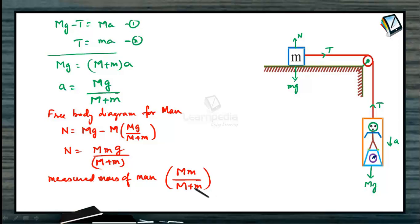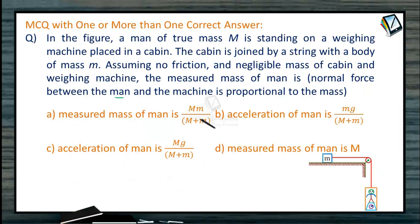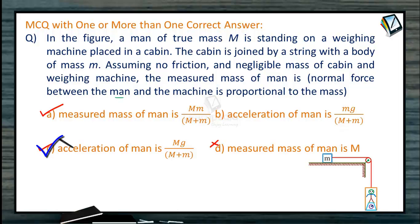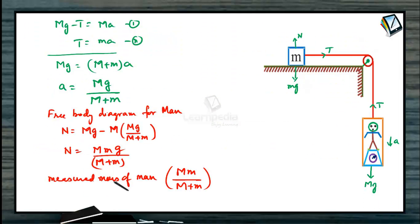So what are the correct options? Measured mass of the man is capital M times small m by capital M plus small m — that is the correct option, so option A is correct. Measured mass of the man being capital M is the wrong option. Acceleration of man we calculated as capital Mg divided by capital M plus small m, so option C is the correct option. D is the wrong option. Therefore, A and C are the correct options for this problem.